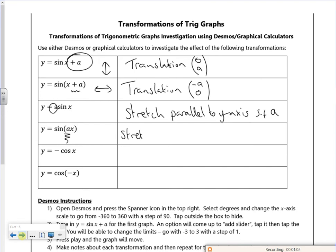And I've got this one which is the wrong way round, so it's a stretch parallel to the x-axis scale factor. Now remember, if it's inside the bracket, it does the opposite. So instead of A, it's 1 over A.